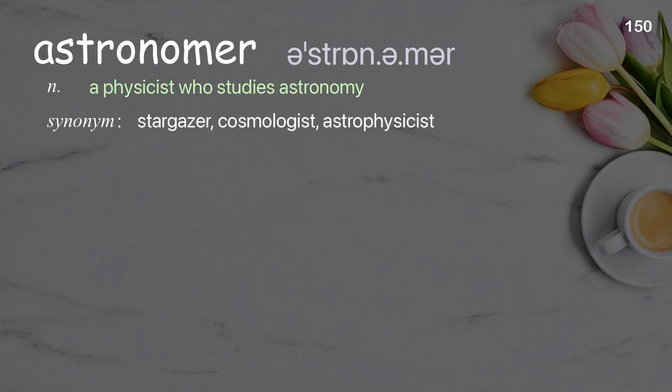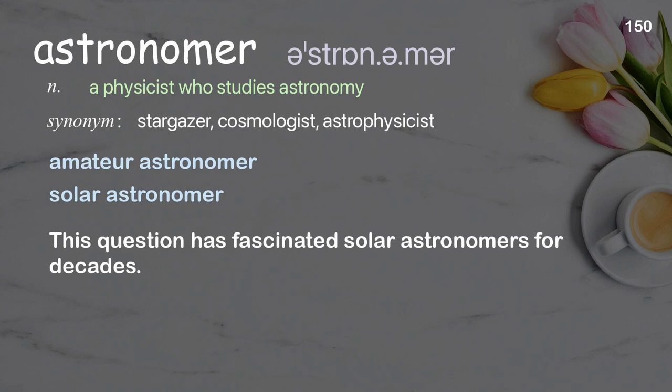Astronomer: A physicist who studies astronomy. Examples: amateur astronomer, solar astronomer. This question has fascinated solar astronomers for decades.